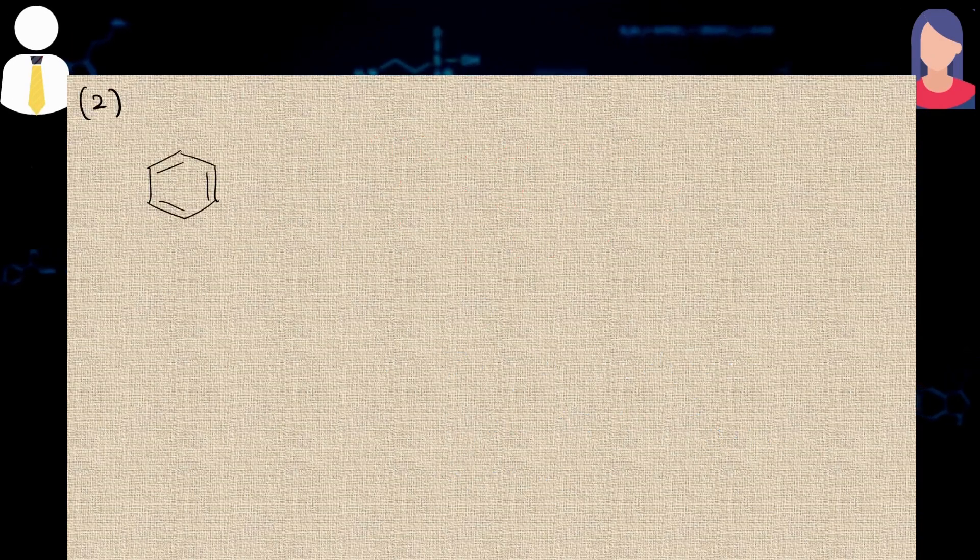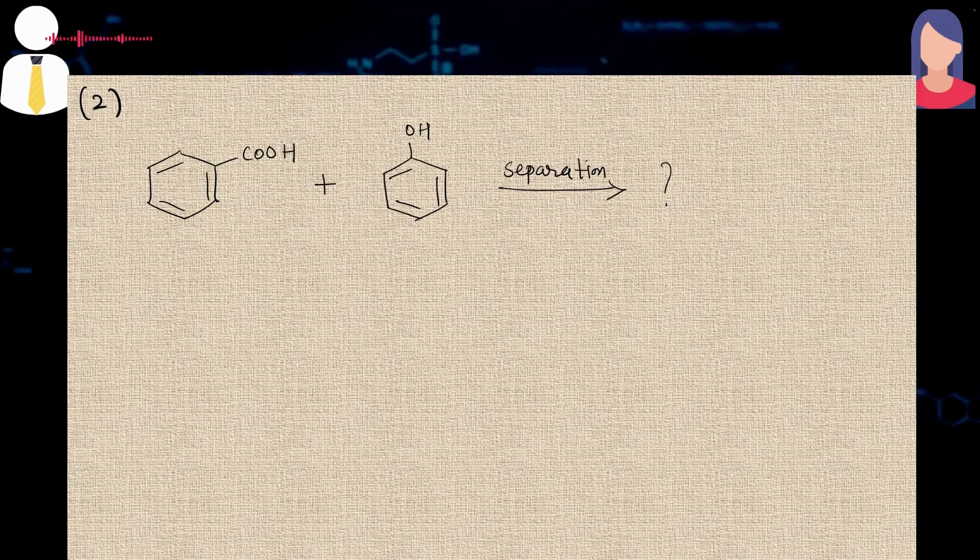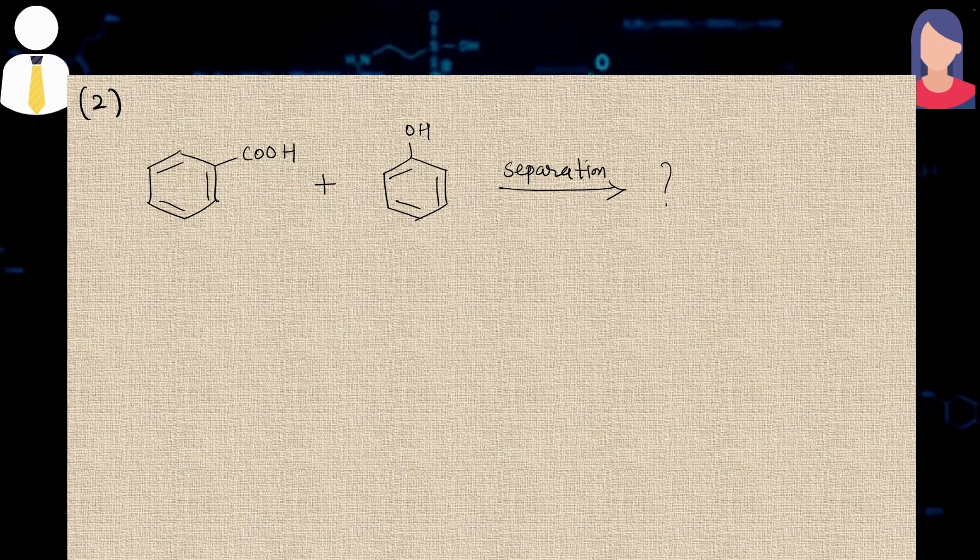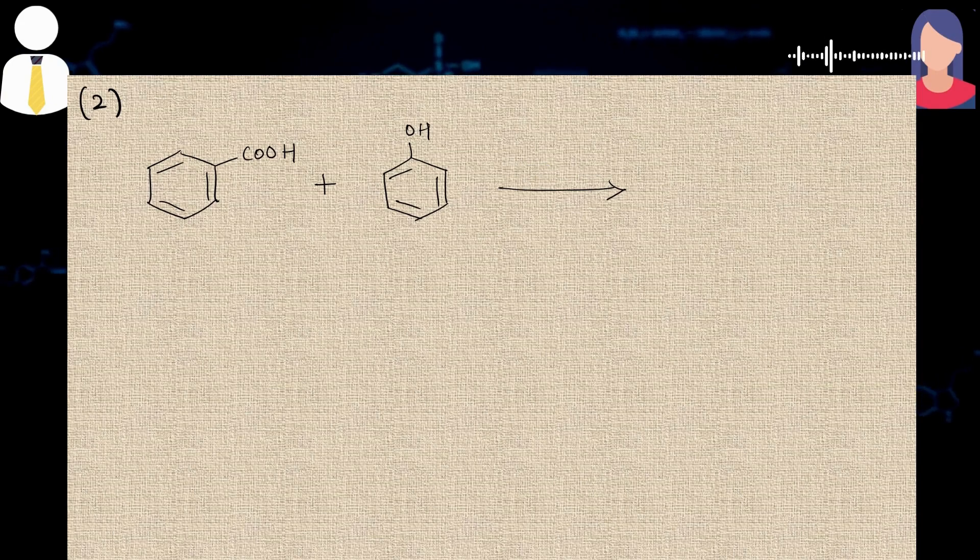Then the second professor started with another question. He asked me to draw the structure of phenol and benzoic acid. Then he asked how can you separate these two compounds. So this was a very basic question because we had performed this experiment in our bachelors during the separation of acid, phenol, base, and neutral compounds. So I said with the help of sodium bicarbonate. He said how. Explain everything in detail and what type of compound is formed after the end of the reaction.